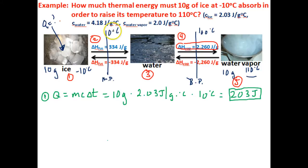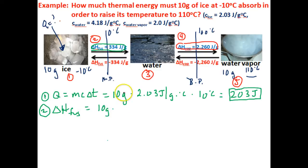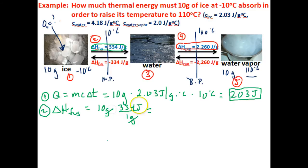Now at 0 degrees Celsius this ice is going to melt, so we need to calculate the heat of fusion for 10 grams of ice. In step two, we calculate the heat of fusion. We've got 10 grams of ice, and the heat of fusion for ice is 334 joules of energy for every 1 gram of ice to melt. That gives us 3,340 joules — so it will take 3,340 joules of energy to melt this ice.